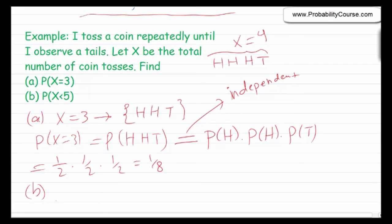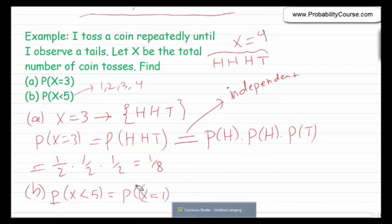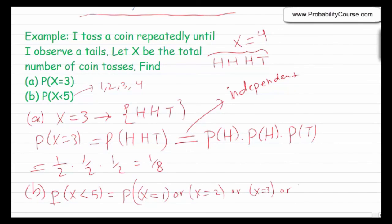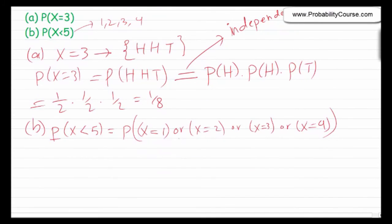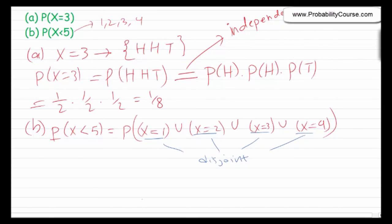For part B, probability of X less than five means X must equal one, two, three, or four. So we need probability of X equals 1, or X equals 2, or X equals 3, or X equals 4. Note these are disjoint events: if X equals one, X cannot equal two, and so on. By the third axiom of probability, the probability of their union equals the sum of their probabilities.